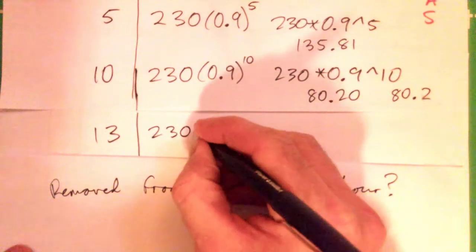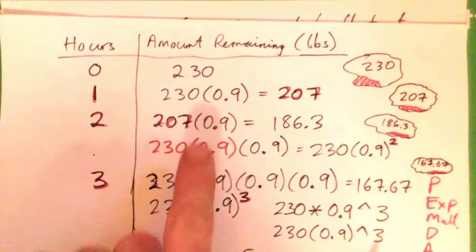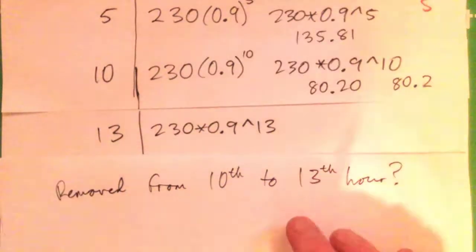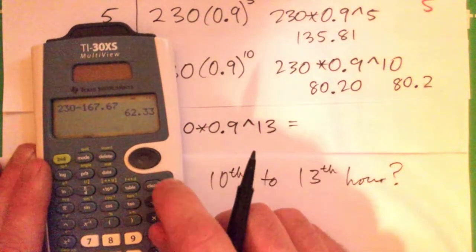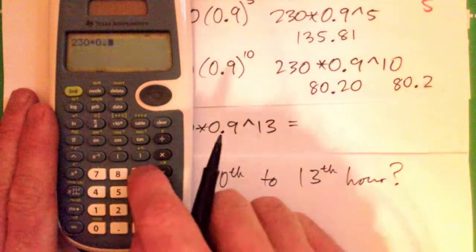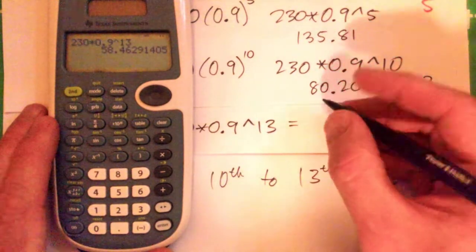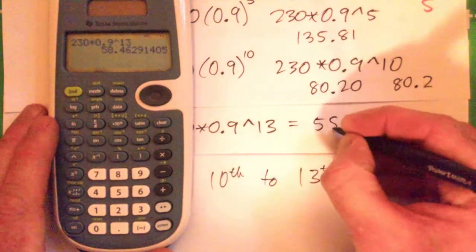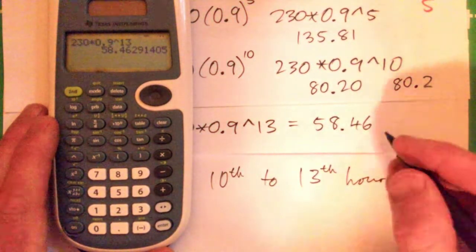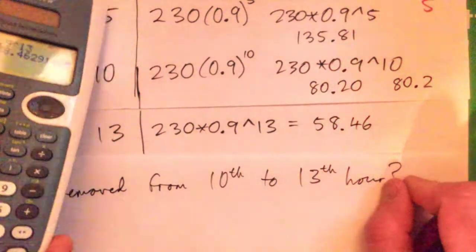So it's just 230 times 0.9 to the power of 13 should give us what's remaining. This is always the amount remaining, because we're getting 90% of 90% of 90% and so on. So 230 times 0.9 to the power of 13 gives 58.46 pounds. After 13 hours, we've got this amount remaining.